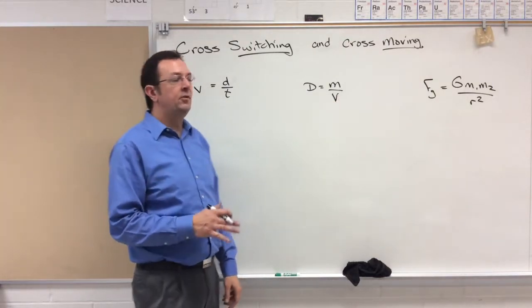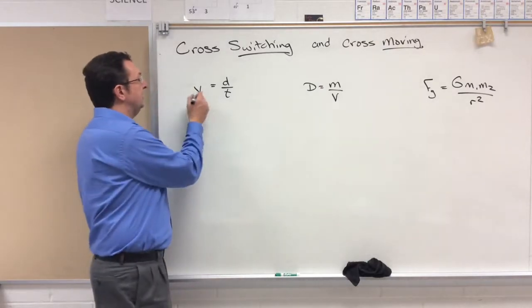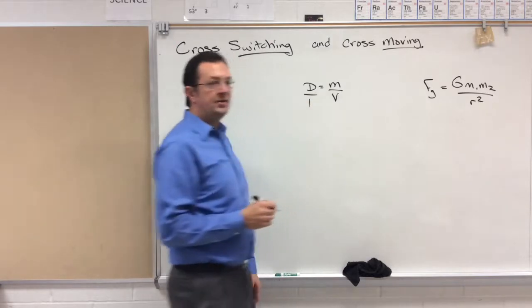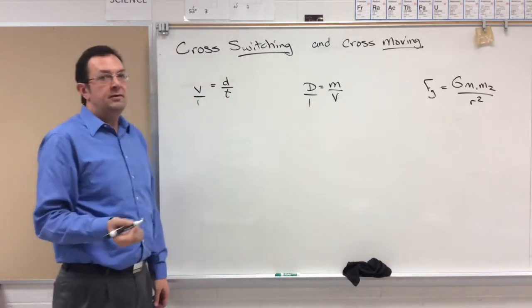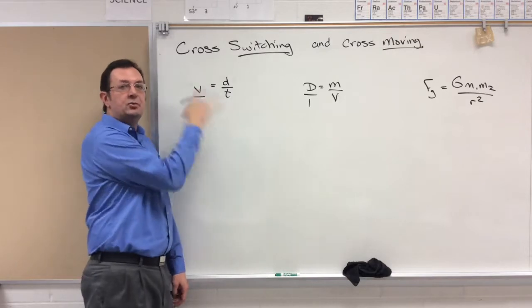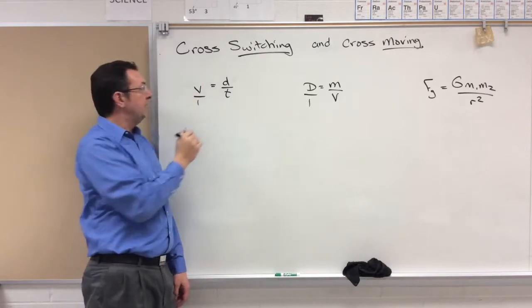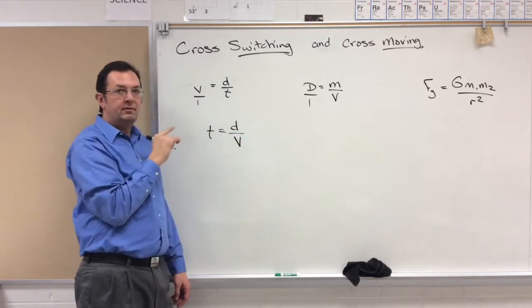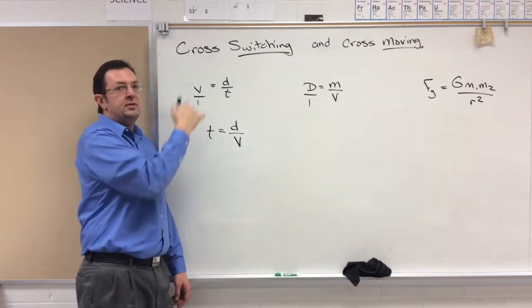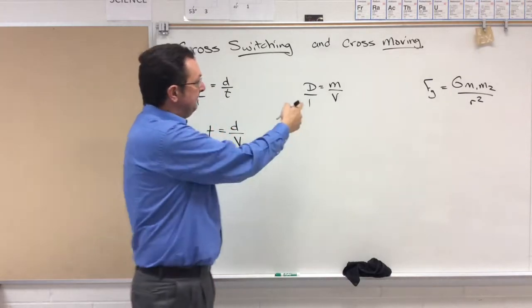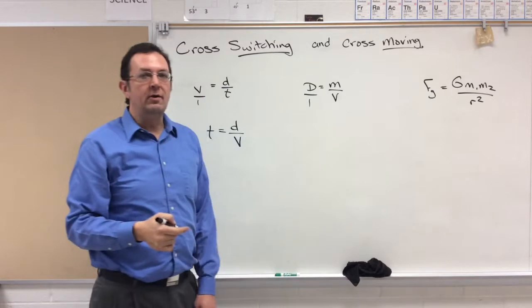So knowing that this is a fraction on one side and this is a fraction on the other side, all that you have to do is realize that you can take the numerator on one side and switch it with the denominator on the other side. So that would be T is equal to D over V. Solving for time, quick switch.